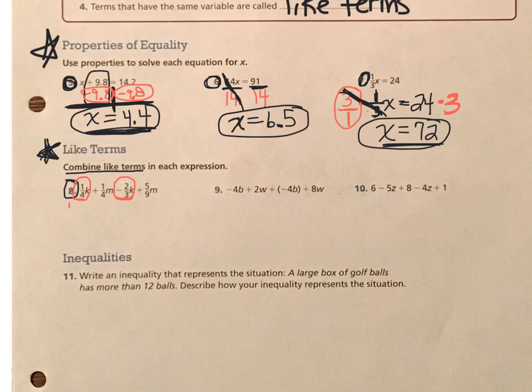1/4 k and negative 2/3 k. And we're going to put those two terms together. But this time we have to get a common denominator before we can do that. So fourths and thirds have a common denominator of 12.